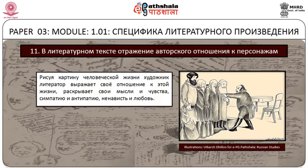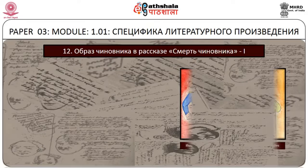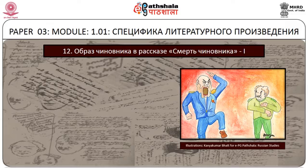Рисуя картину человеческой жизни, художник-литератор выражает своё отношение к этой жизни, раскрывает свои мысли и чувства, симпатию и антипатию, ненависть и любовь. Отношение писателя к действующим лицам раскрывается через поступки персонажей, их разговор, прямые высказывания со стороны автора и т.д. Автор осуждает недостатки или восхищается положительными качествами героев.